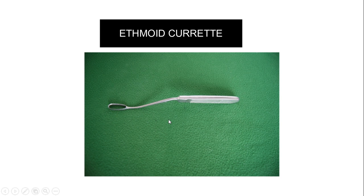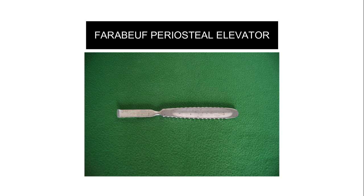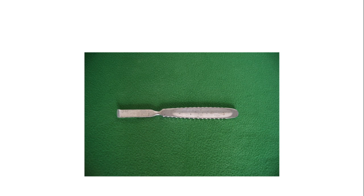This is the ethmoid curette, used in ethmoidectomy. This is the parapuve periosteal elevator, used to elevate the periosteum — for example in mastoidectomy.